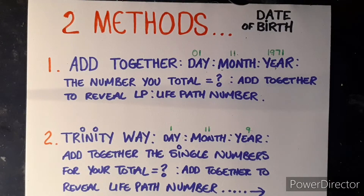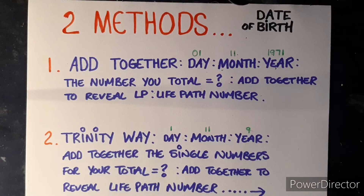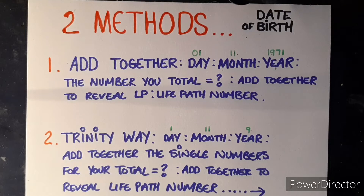For me that's twenty-one, so two plus one is three. I reach the same number, three, even if I add all my date of birth up in one go. So you can do it as one calculation or in three separate parts.